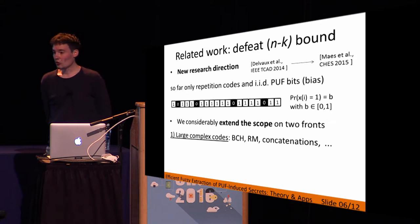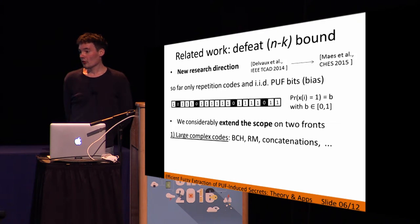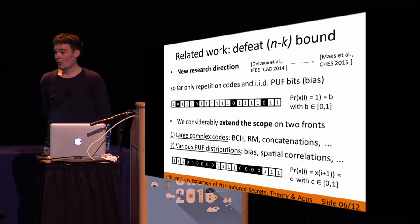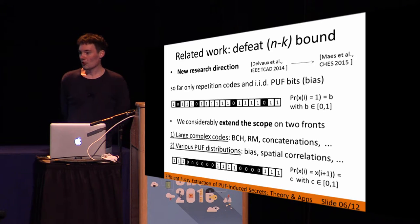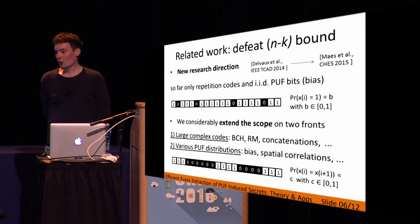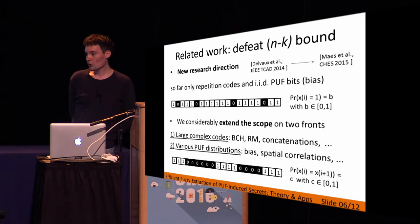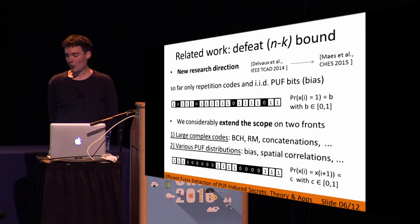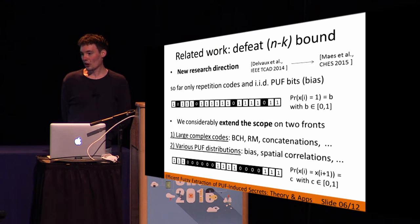We considerably extend the scope on two fronts. First, we are able to cover large, complex codes as used in a practical key generator — BCH codes, Reed-Muller codes, concatenation of codes. Second, we can cover various PUF distributions. In the manuscript, we mainly focus on one proof-of-concept distribution with spatial correlation, where the probability that two neighboring bits are equal is a parameter C between 0 and 1 — if C is 0.7 or 0.8, neighboring bits tend to have the same value.